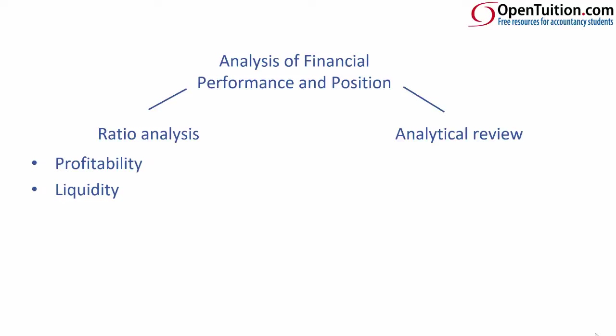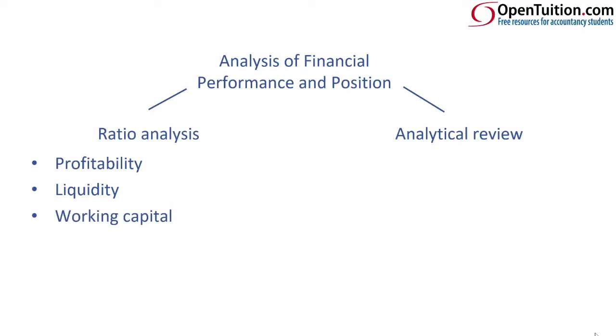Liquidity should be familiar to you already with your current and quick ratios. Working capital, likewise, from F1, looking at inventory, receivable and payable days. Solvency we've touched upon also when we've looked at the world of gearing and our ratios of debt to equity. And then one of the new aspects you see in F2 is looking at your investor ratios, some of which you may have seen if you take a keen interest in the stock markets, such as price earnings ratios and earnings per share.